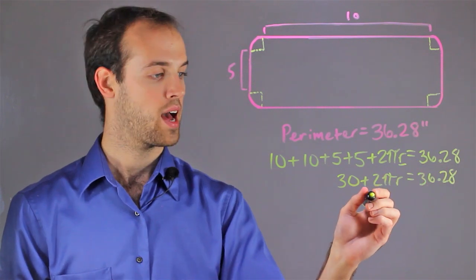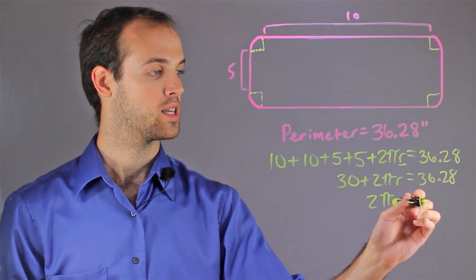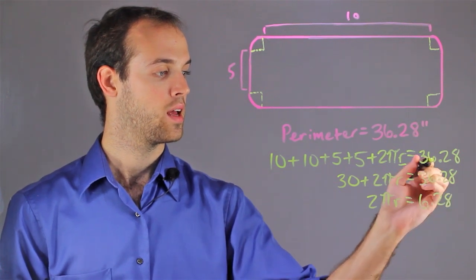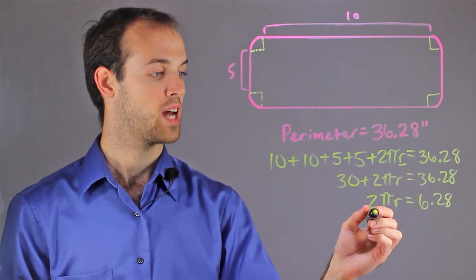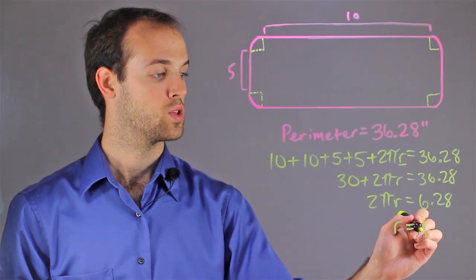Then subtract 30 from both sides, and I get 2 pi r is equal to 6.28. And from here, I would divide both sides by 2 pi, which would get me r equals 1.